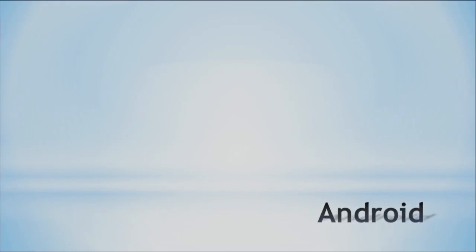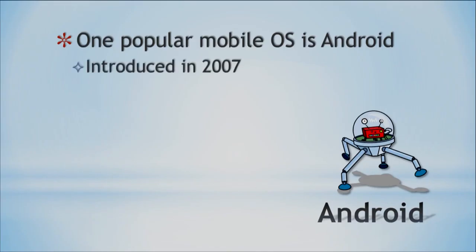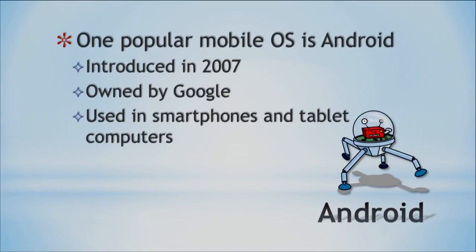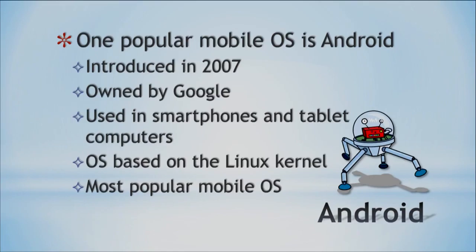We'll go over a couple of mobile operating systems. One popular one is Android, which came about around 2007 and is owned by Google. I hope you know what Google is — they're the people that have the search engine. Android is used in smartphones and tablet computers, and it's based on a Linux kernel.